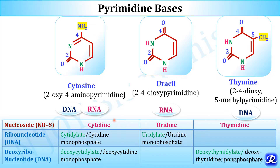If cytosine is the pyrimidine base, the nucleoside is cytidine; the ribonucleotide is cytidylate and the deoxyribonucleotide is deoxycytidylate. If uracil is the base, the nucleoside is uridine and the ribonucleotide is uridylate or uridine monophosphate. If thymine is the base, the nucleoside is thymidine and the deoxyribonucleotide is deoxythymidylate or deoxythymidine monophosphate.